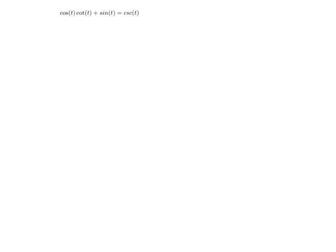In this video we verify the trig identity that the cosine of t times the cotangent of t plus the sine of t is equal to the cosecant of t.